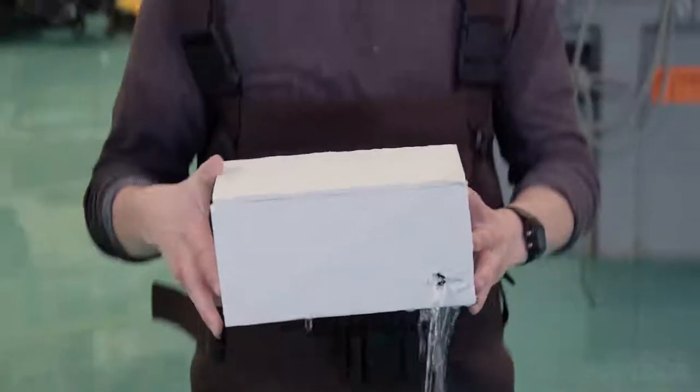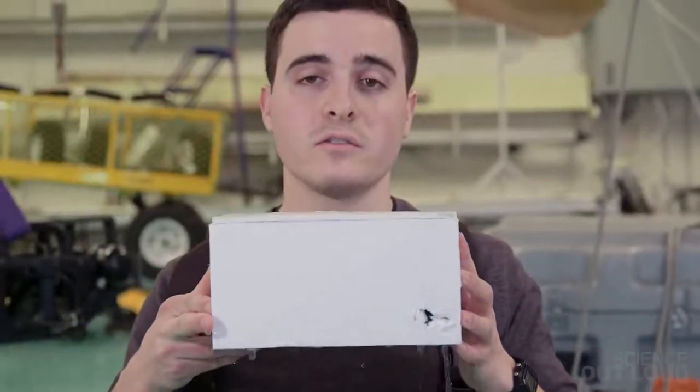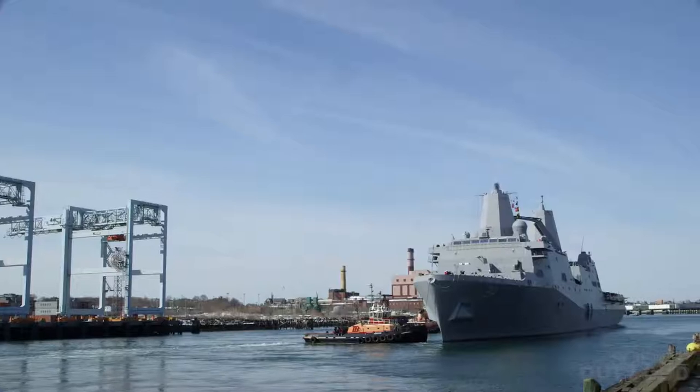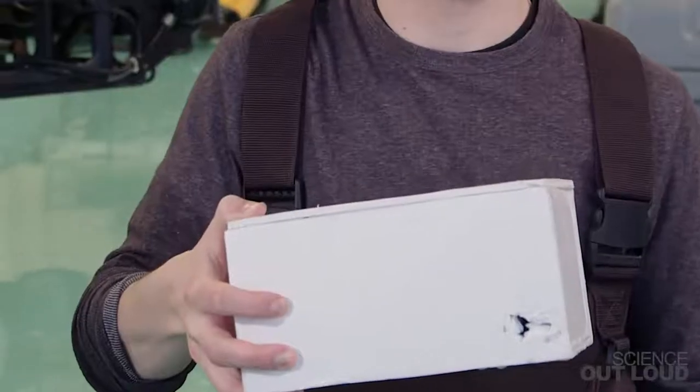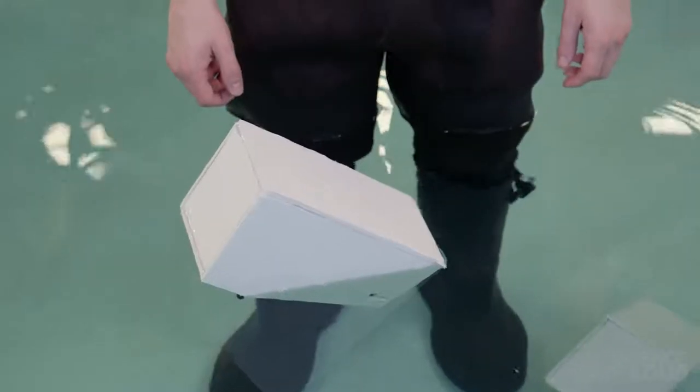This box uses the same kind of design that naval architects use to prevent ships a thousand times bigger from sinking. What's so special about this box that prevents it from sinking even with the big hole in its side?